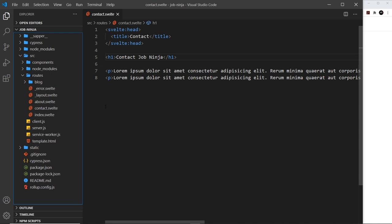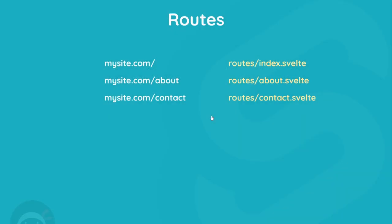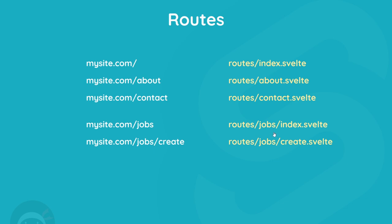So when would you use a folder instead of a single component? Normally you'd use a folder if you need to store route resources, have subsequent sub-routes, or need server files. For single one-off routes like forward slash about or forward slash contact, a component at the root level works fine. But where you have multiple sub-routes, create a folder — for example, a jobs folder with an index component and a create component inside it for sub-routes.